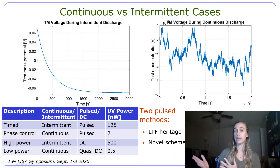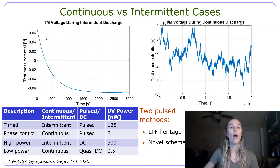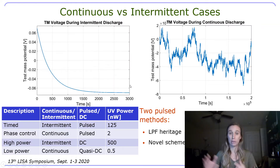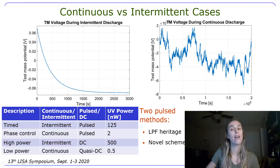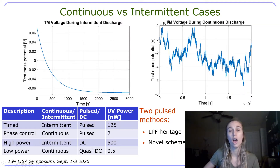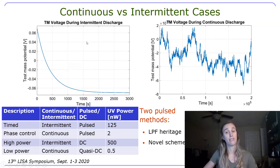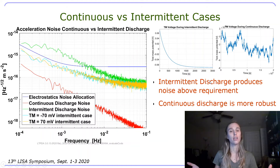Let's look at both the continuous and the intermittent cases. For the intermittent case, we let the charge slowly increase up to approximately 70 millivolts, and then in about an hour and a half, we let the charge go all the way back down to minus 70 millivolts, then stop all UV light shining. The continuous case keeps the test mass voltage potential as close to zero as possible. We see some jitter that is a function of the environment shot noise and the UV power shot noise, and it stays well below in the tens of microvolts range. The intermittent case is from LISA Pathfinder heritage, and trying to keep the test mass potential very close to zero is a novel method.